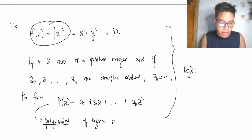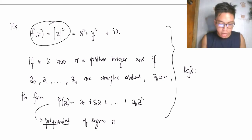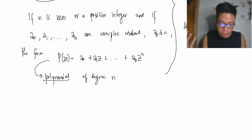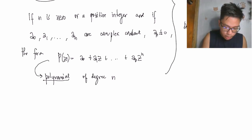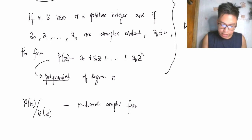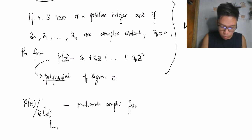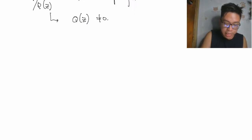Note that the sum has a finite number of terms and the domain of definition is the entire z-plane. The quotients of polynomials P(z)/Q(z) are called rational complex functions, which are defined only when Q(z) ≠ 0.